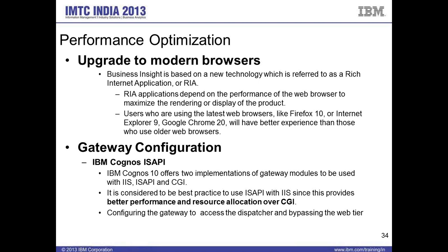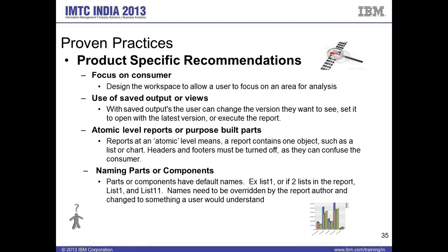Browser compatibility is one of the key concerns faced by organizations. When deploying Cognos Workspace, make sure the organization upgrades their browsers so users get improved performance. Additionally, when configuring the gateway, always configure the ISAPI gateway rather than a CGI gateway for better performance. If you have large usage of Cognos Workspace with IIS, always use the ISAPI gateway instead of CGI.